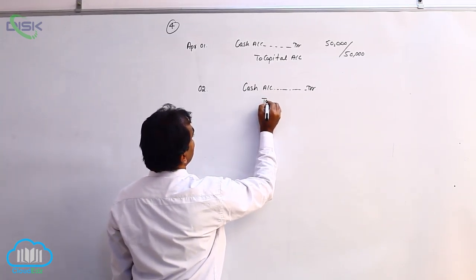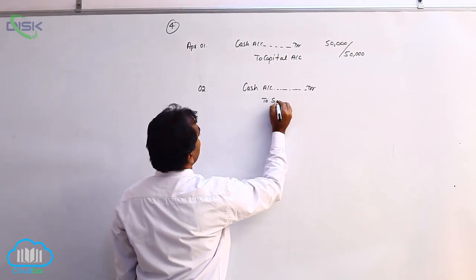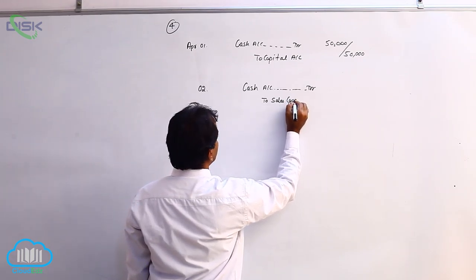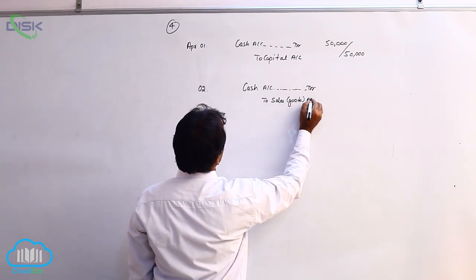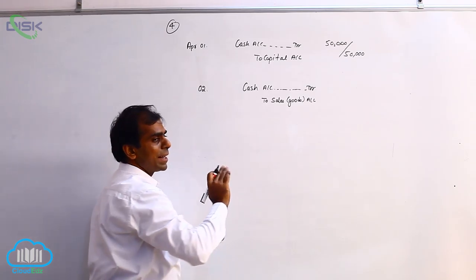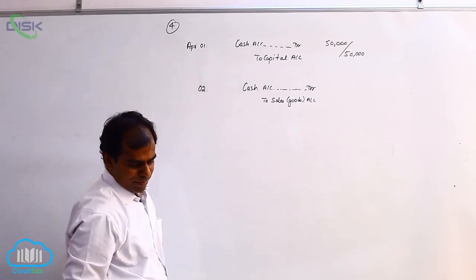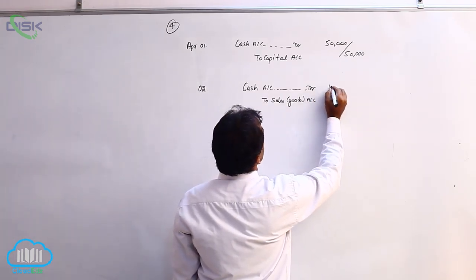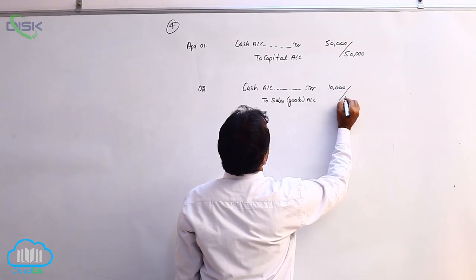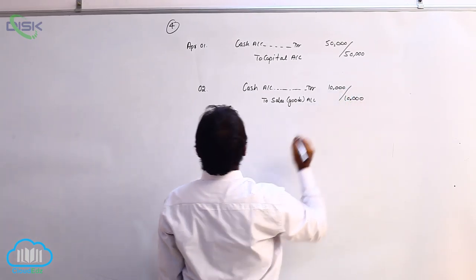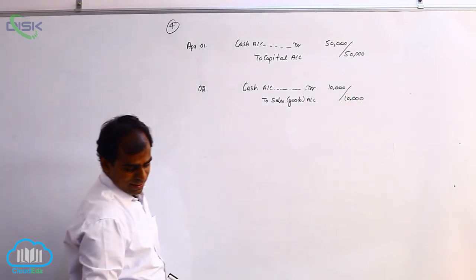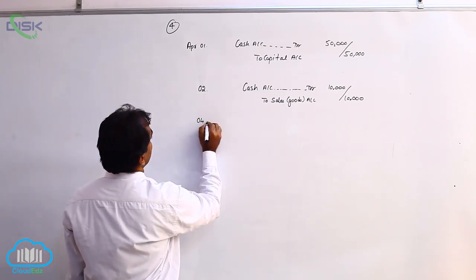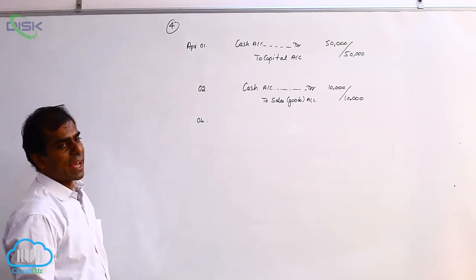The next transaction: cash sales. The business has sold goods for cash. Cash is coming in — applying the rule of debit what comes in, we are debiting cash. Goods are going out; goods are a real account, so applying credit what goes out, we are crediting them. The amount being 10,000.